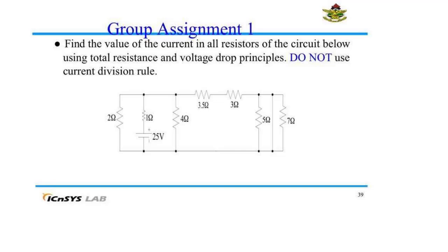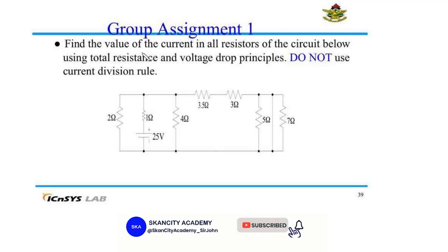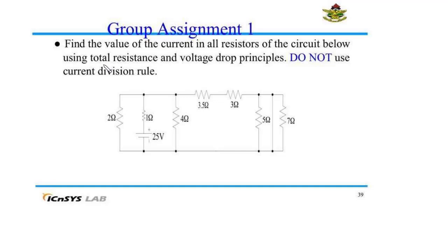Let's try to solve this group assignment. We are going to provide a step-by-step solution. We are asked to find the value of the current in all resistors of the circuit using total resistance and voltage drop principles. We are given a caution not to use current division rule, so we are going to find the current in all resistors using the principles of total resistance as well as voltage drop.